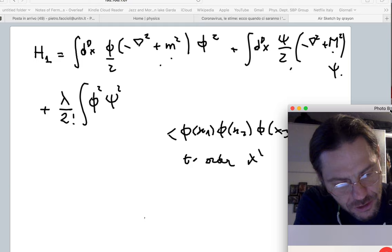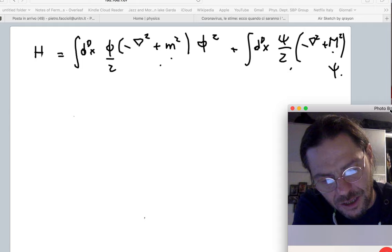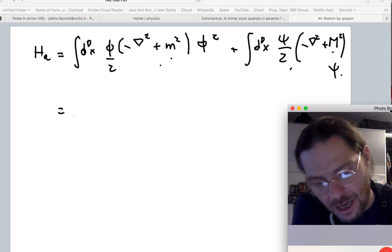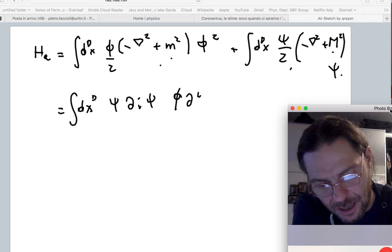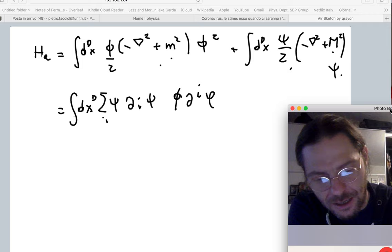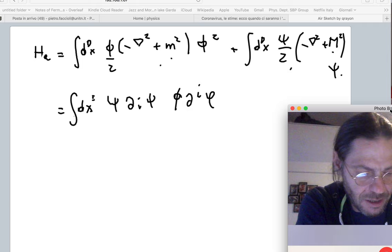Okay, compute this. This is a nice exercise. Another interesting theory to be doing is one in which, well, let me keep two fields for simplicity. I'll give you another example, but this time I have a theory which is derivatively coupled. So for instance, I call it psi partial_mu psi phi partial_mu phi.